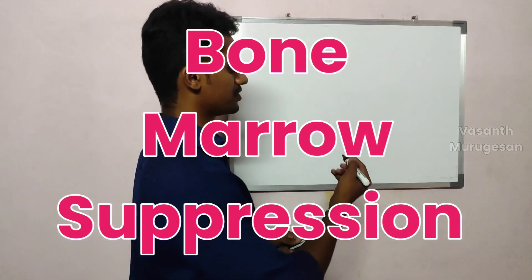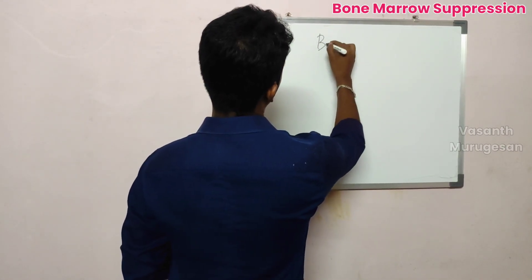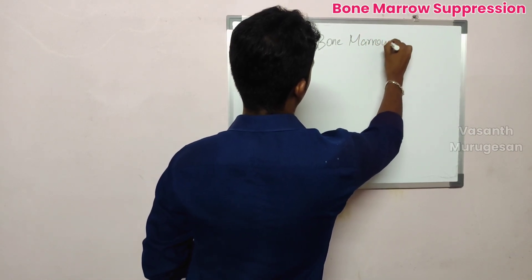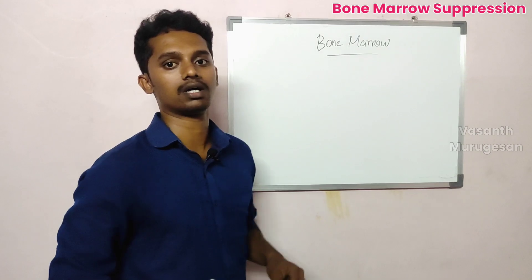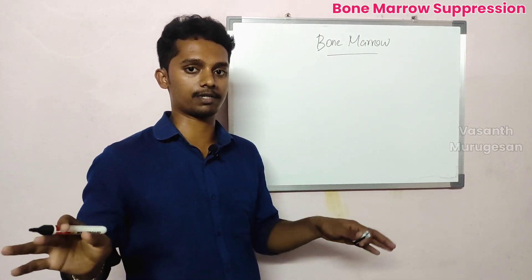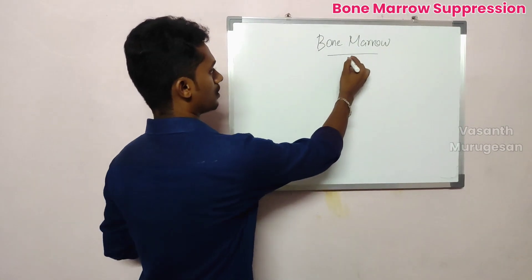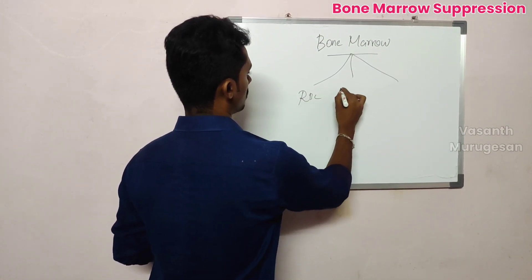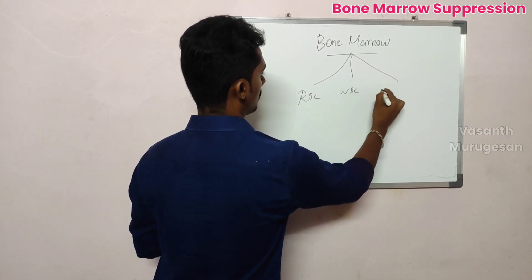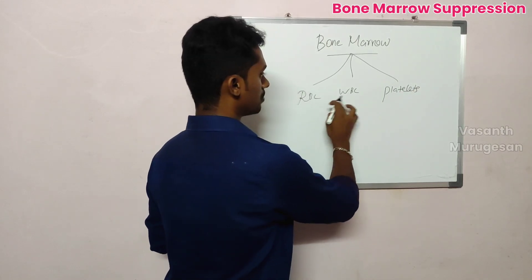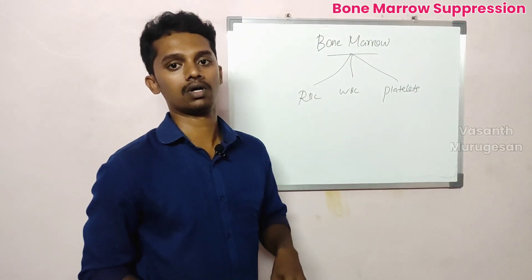That is bone marrow depression. This is bone marrow. We all know about bone marrow. We mostly know about the medical field. Bone marrow will produce RBC, WBC, and platelets. This is bone marrow — to produce these three cells.